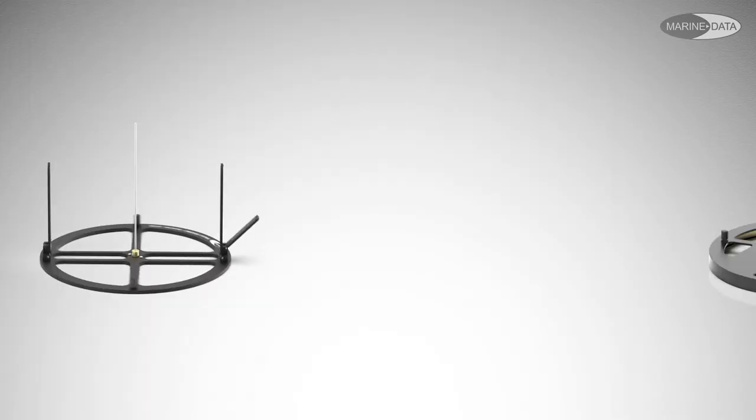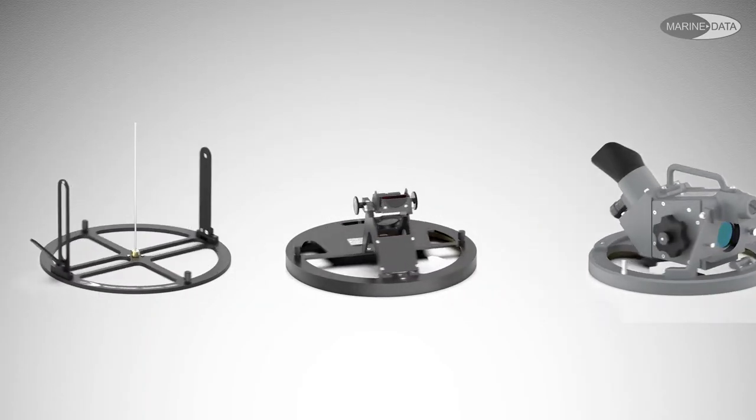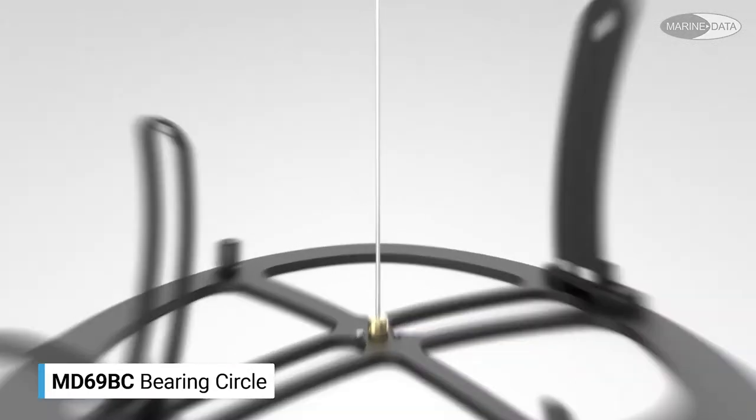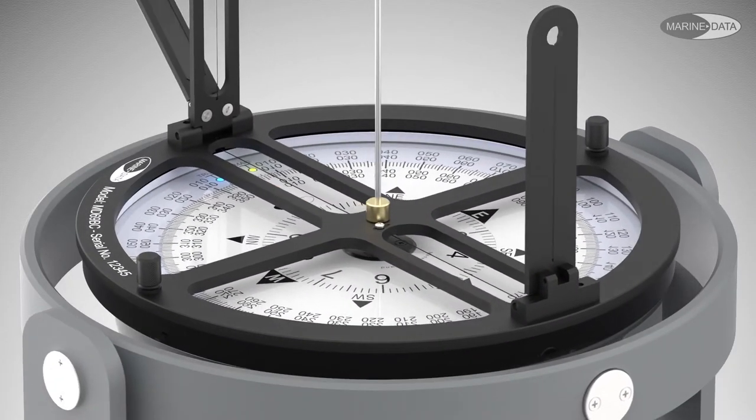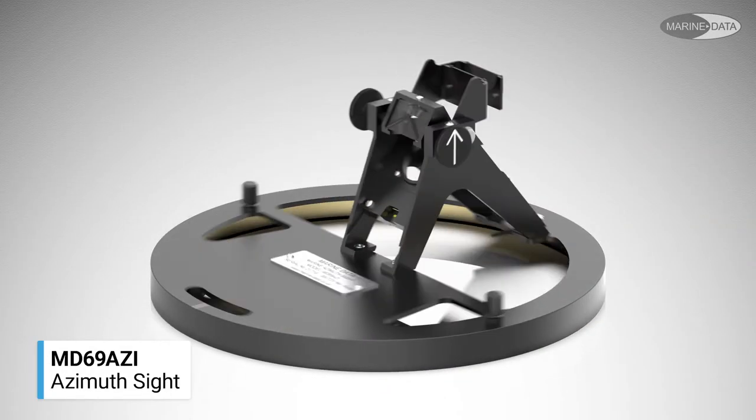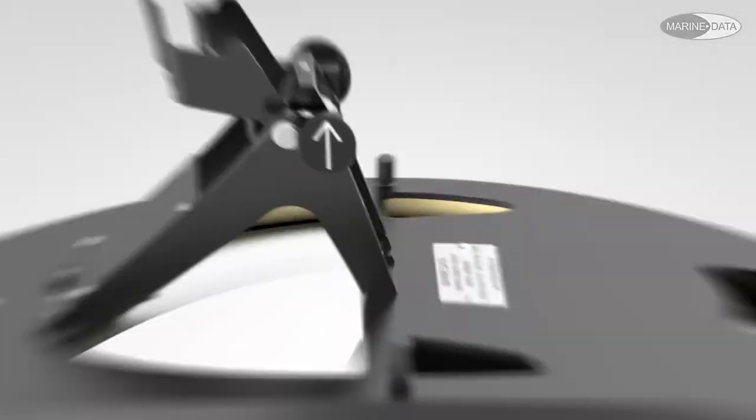For taking accurate compass bearings, you will need to use one of our bearing sights. For short range targets, the MD69BC bearing circle includes sighting vanes and shadow pin. Short to medium range targets is where the MD69AZI excels.